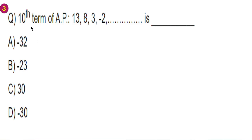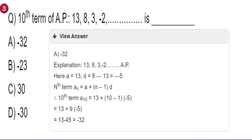Next problem: find the 10th term of the AP 13, 8, 3, minus 2, dash dash. Here a equals 13 (first term), and d equals t2 minus t1 equals 8 minus 13 equals minus 5. The nth term formula is: a(n) equals a plus (n minus 1) into d.